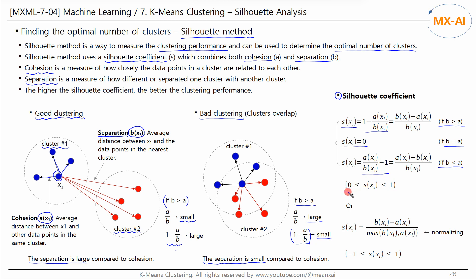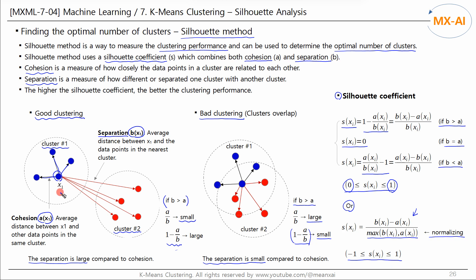This allows the silhouette coefficient to be between 0 and 1. The closer the silhouette coefficient is to 1, the better the clustering performance, and the closer it is to 0, the worse the performance. Alternatively, the silhouette coefficient can be defined using the larger of cohesion and separation as the denominator, making the range minus 1 to plus 1, where the denominator normalizes B minus A. Silhouette coefficients are calculated for all data points, and their average is used as the silhouette score. The larger the silhouette score, the better the clustering performance.